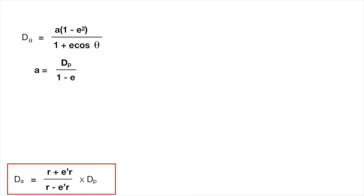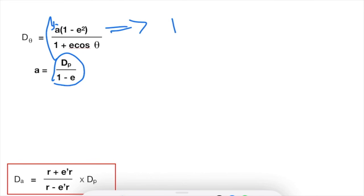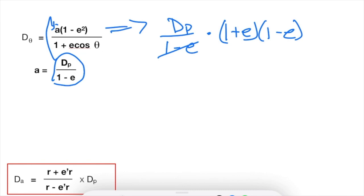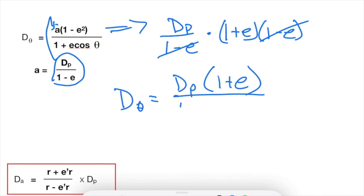To eliminate A and introduce dp instead, we plug our expression for A into the general ellipse equation. In the numerator we get dp over 1 minus E times 1 plus E times 1 minus E, but since 1 minus E squared equals 1 plus E times 1 minus E, the 1 minus E cancels out. Long story short, the orbital equation in terms of our variables becomes: d(θ) equals dp times 1 plus E, all over 1 plus E cosine θ.